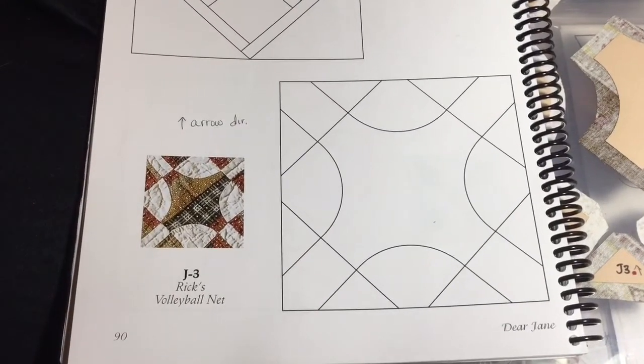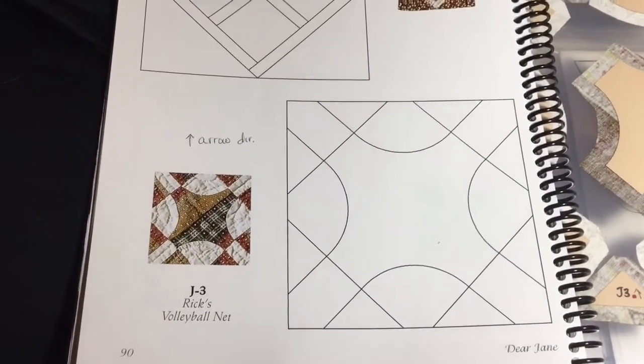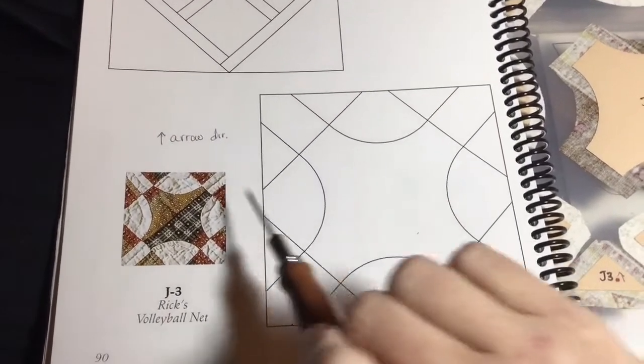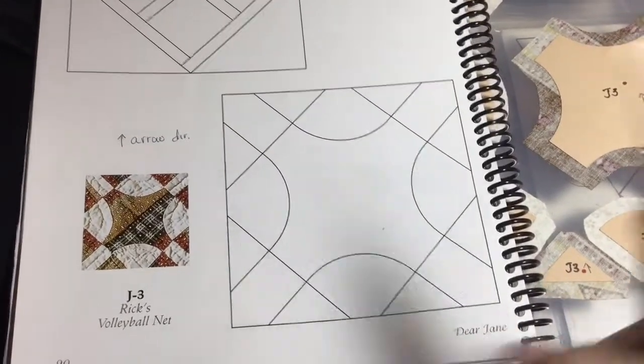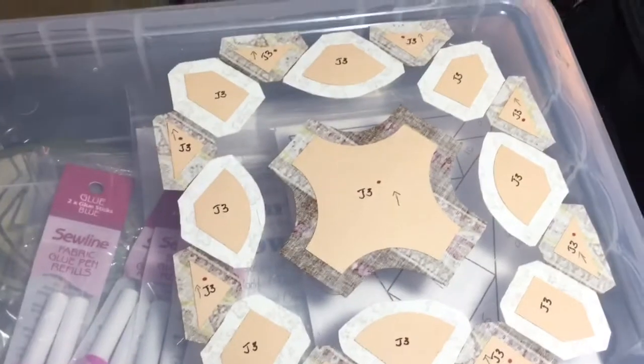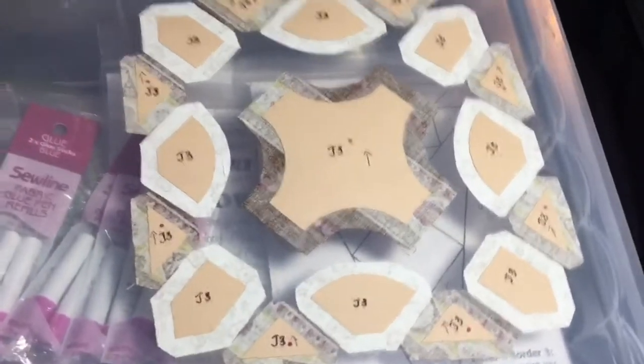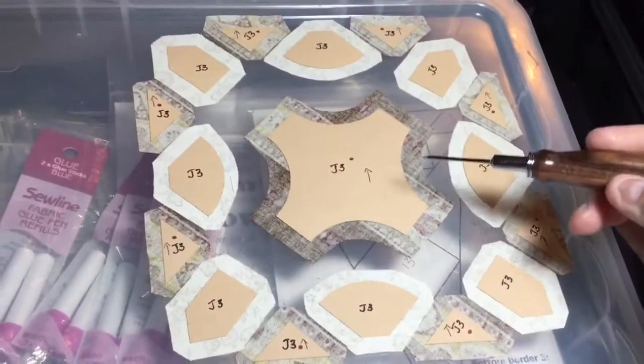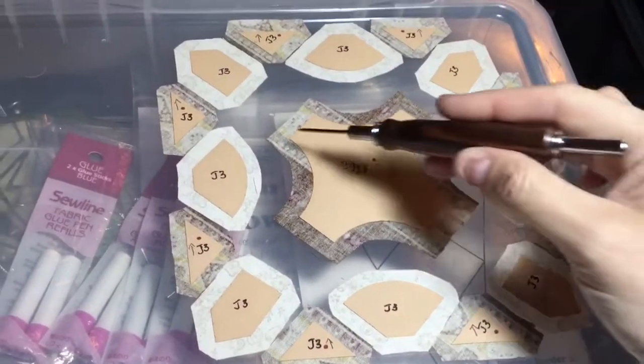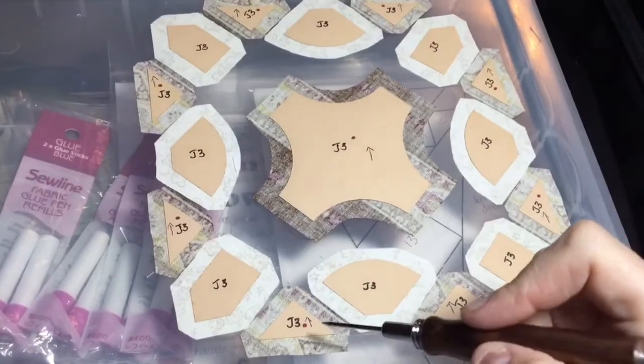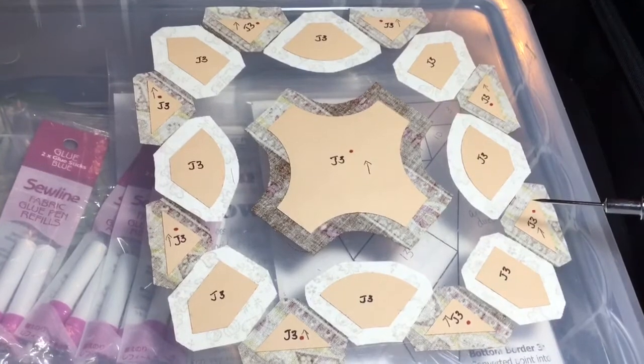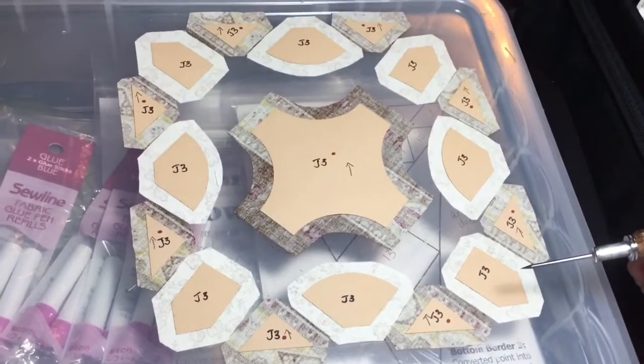Now we're up to the J3 block, and J3 is straightforward. My arrow direction notation is because I put arrows on my pieces. So my pieces are all laid out as usual, and my arrow direction was because I had a directional fabric, and I ended up putting the stripe on the 45 degree angle. I just made sure that all my arrows were going in the same direction to make sure that the stripes would be going in the same direction when I put them in their spots.